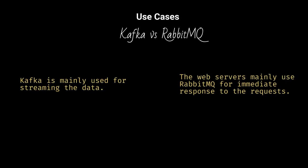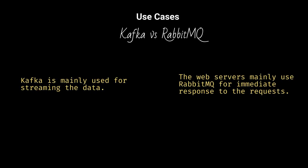Kafka is mainly used for streaming data. Web servers mainly use RabbitMQ for immediate response to requests.